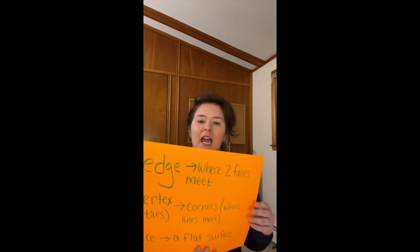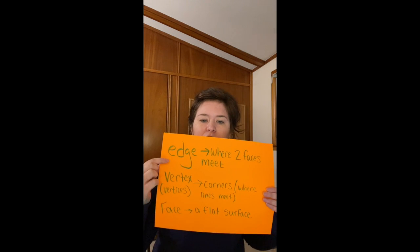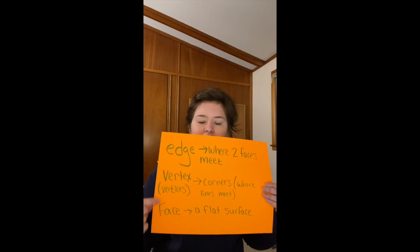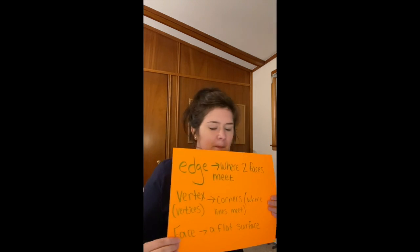Some vocabulary that we had talked about are edges, vertexes, and faces. Remember that faces are the flat surfaces. And then the vertexes — or the vertices when it's more than one — the vertexes are like the corners. And then the edges are along the sides, where the two faces meet.